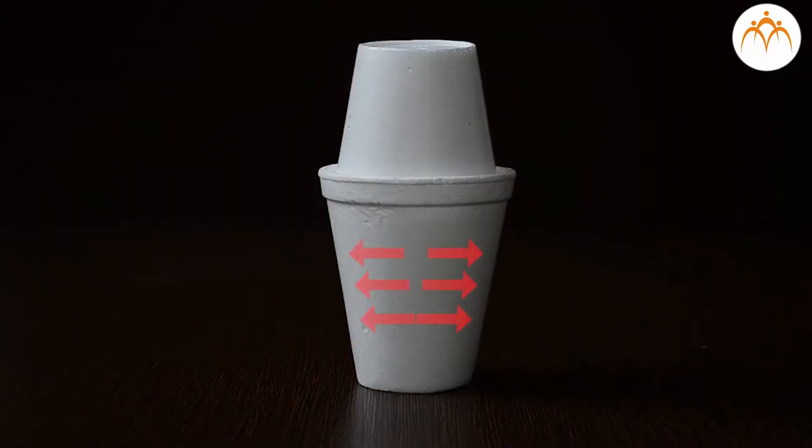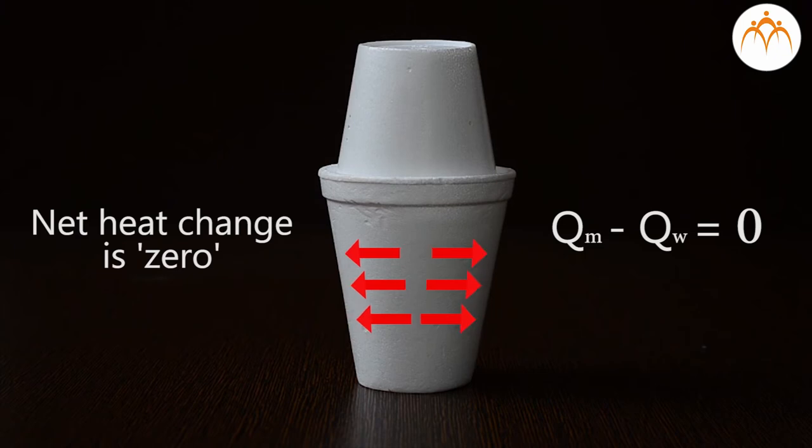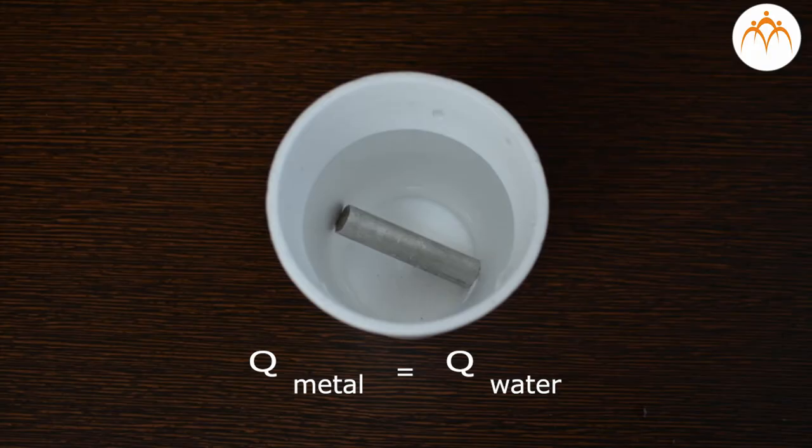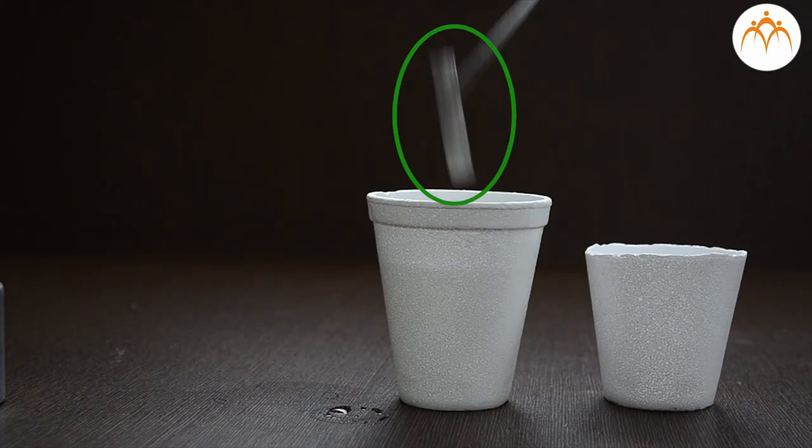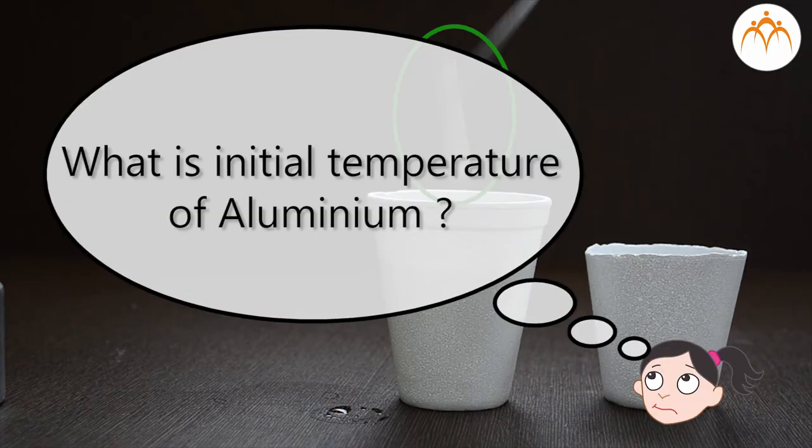If we assume that there is no heat loss to the surroundings, net heat change is zero. That means total heat energy of water and metal in the container is the same. We can use this information to find out the initial temperature of the aluminum rod.